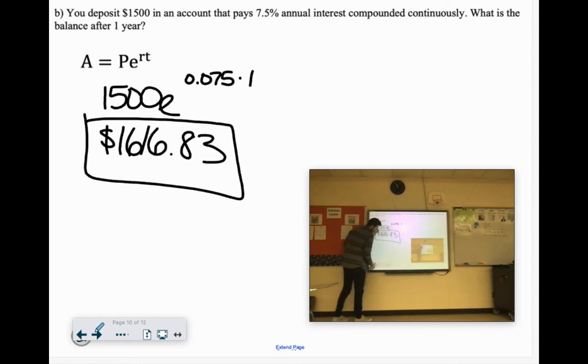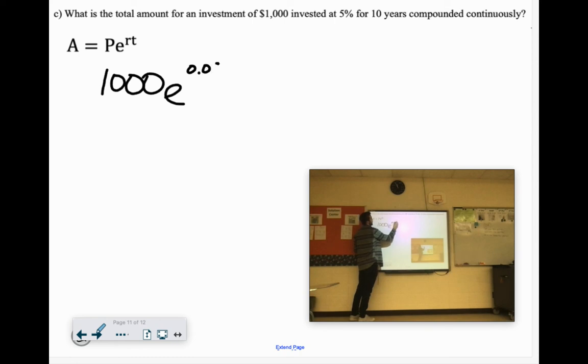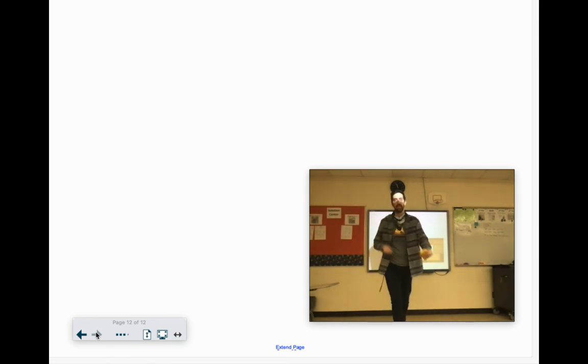We got one more of those. What is the total amount for an investment of $1,000, 5% for 10 years? 1,000 times 0.05 times 10. Now 0.05 times 10 is 0.5, that's 1,000 times e to the 0.5 power. $1,648.72. Yes, consider yourself natural based.